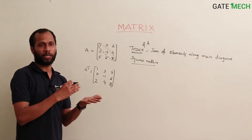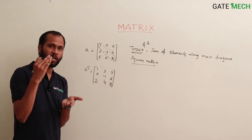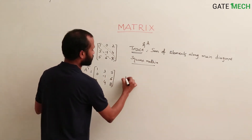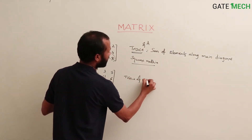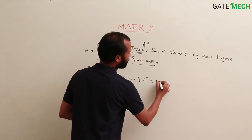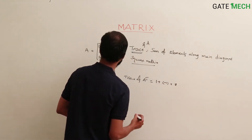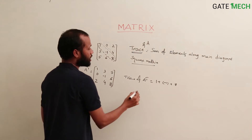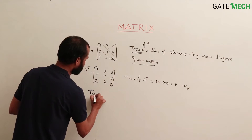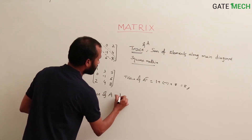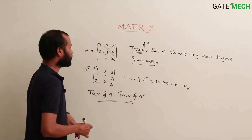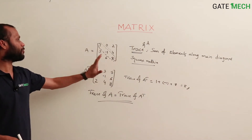As already explained, for any matrix, the diagonal elements of a matrix and its transpose remain the same. So the trace shall also remain the same. Trace of A transpose equals 1 plus minus 1 plus 8, which is 8 — the same as trace of A.